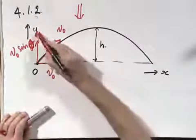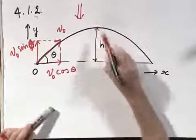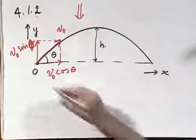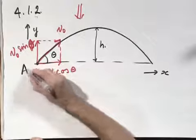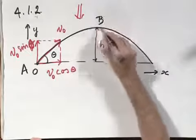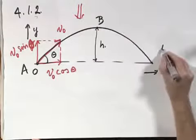And this velocity in the y direction comes to a halt when it is at its highest point and then reverses. Let's call this point A. Let's call this point B. And that's this point where it hits the ground, C.